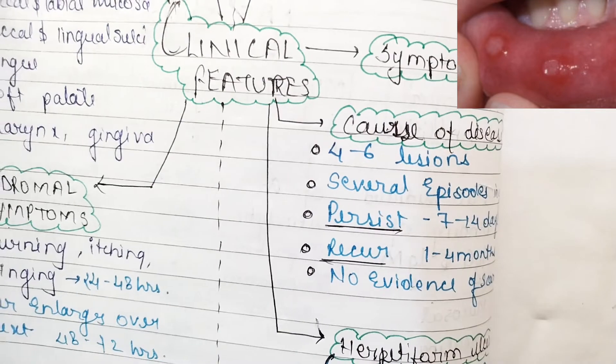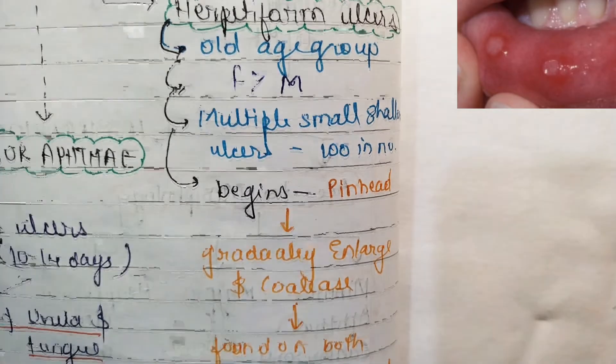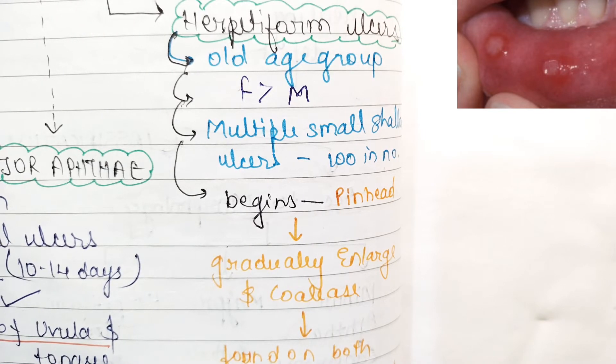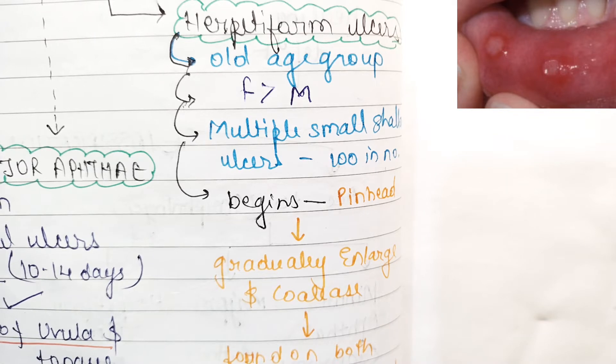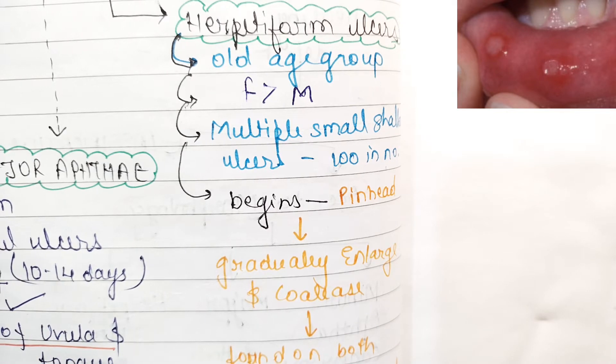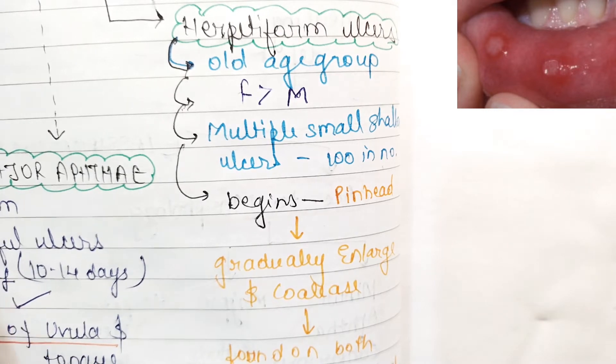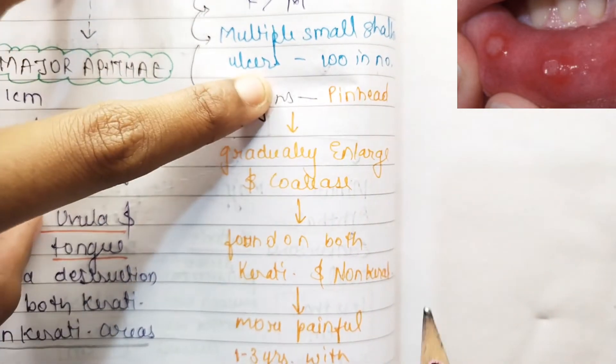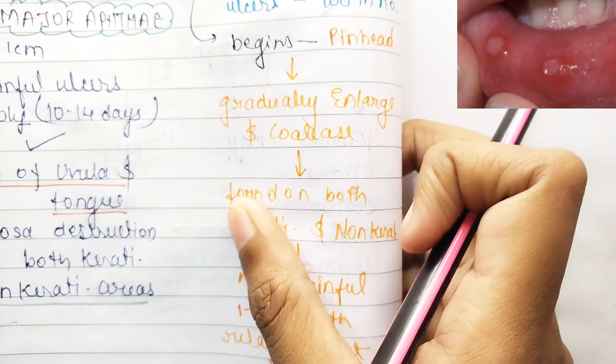Coming to herpetiform ulcers. The main characteristic is age and sex. In clinical features we saw 2nd and 3rd decade, early stages of life. But herpetiform ulcers can be seen in older age groups. Females are more predilected than males, which is the total opposite of normal aphthous stomatitis. There are multiple shallow ulcers, 100 in number, less than 0.5 cm. They begin as pinhead, gradually enlarge and coalesce. They're found on both keratinized and non-keratinized areas and are more painful, lasting 1 to 3 years with relatively short remissions. This is all about the clinical features.